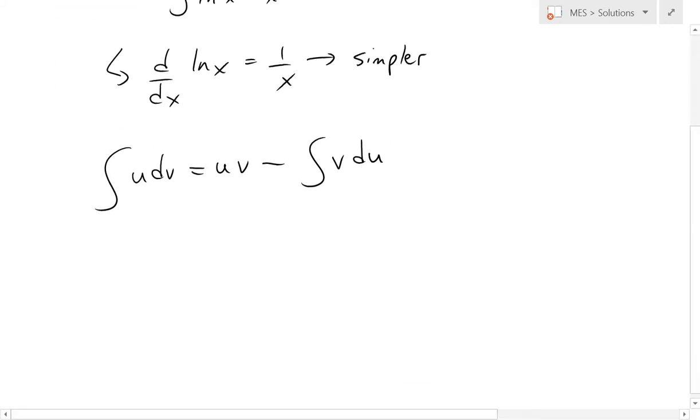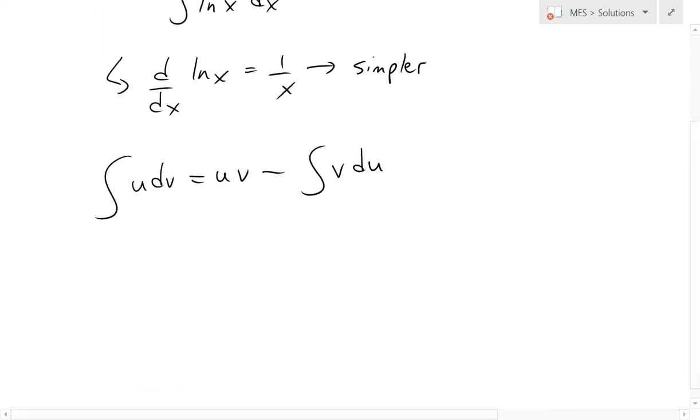we're going to set u as ln of x because the derivative is going to be simpler. So we're going to have u equals ln x, now du equals 1 over x dx.